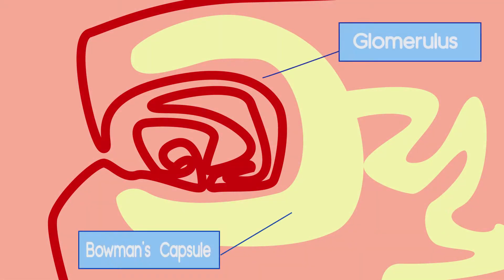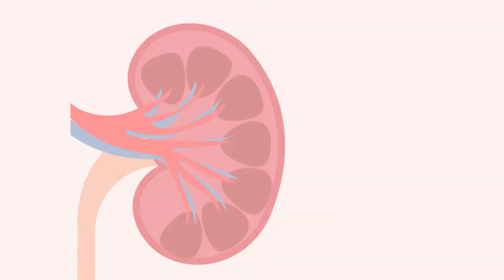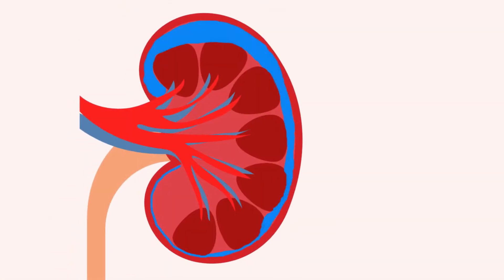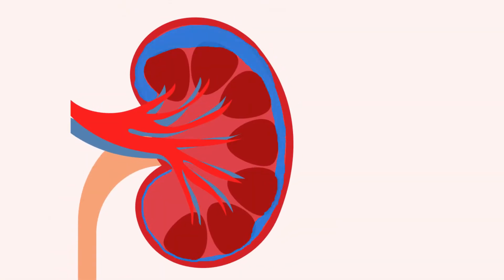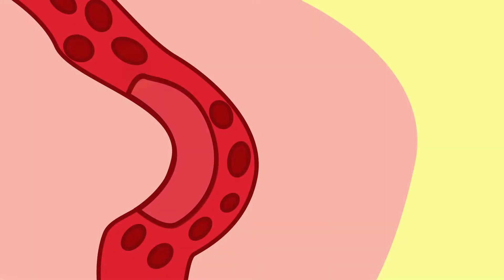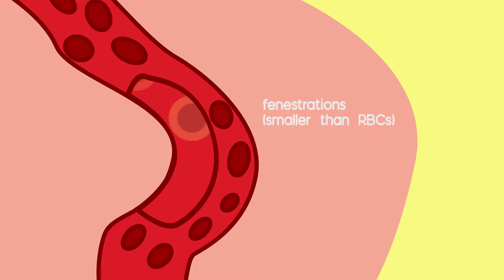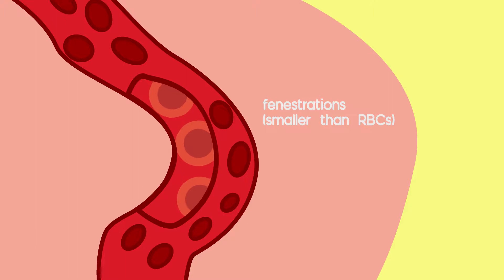We are going to start with the glomerulus of a nephron, which is the capillary where blood is filtered. Glomeruli are located in the cortical layer of the kidneys. The glomerulus is a fenestrated capillary, which means that it has openings large enough to remove the majority of things from the blood, but small enough to prevent cells from leaving the blood.